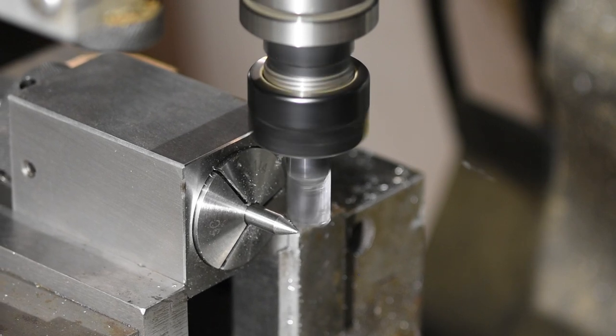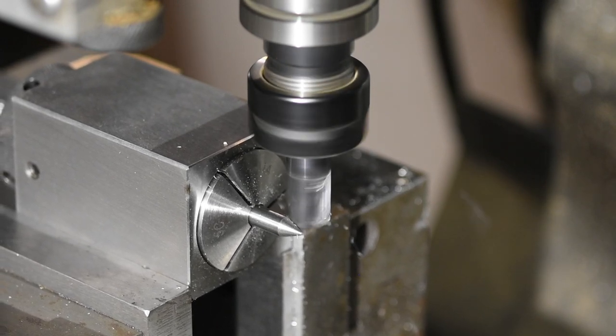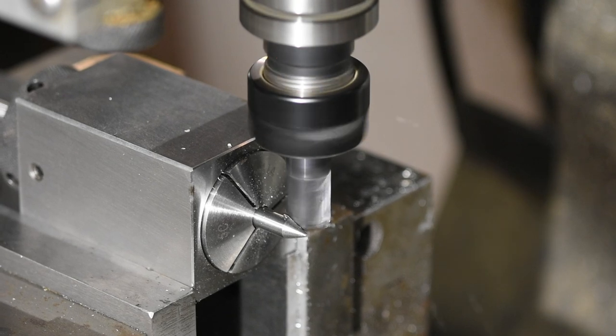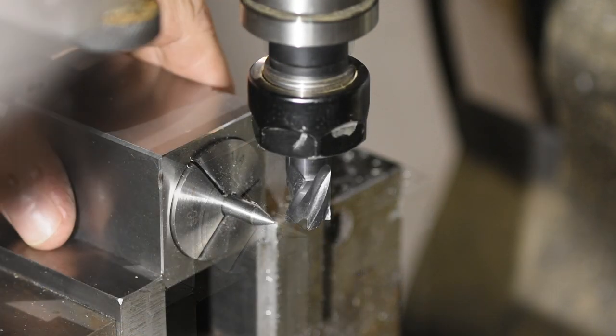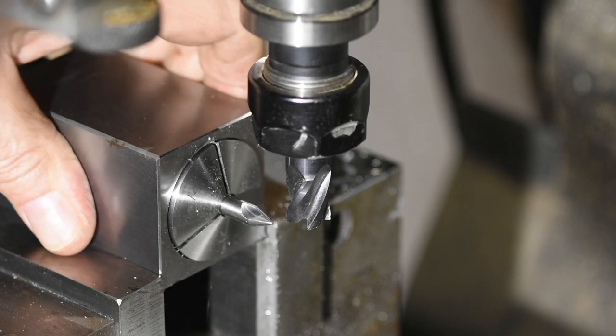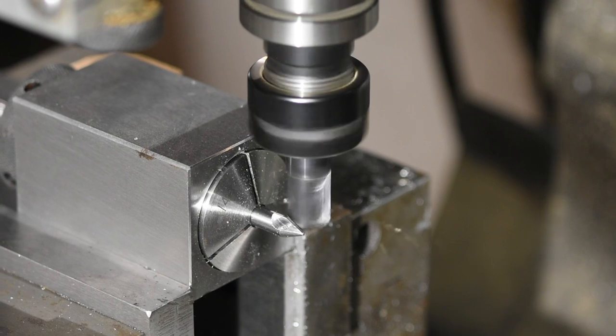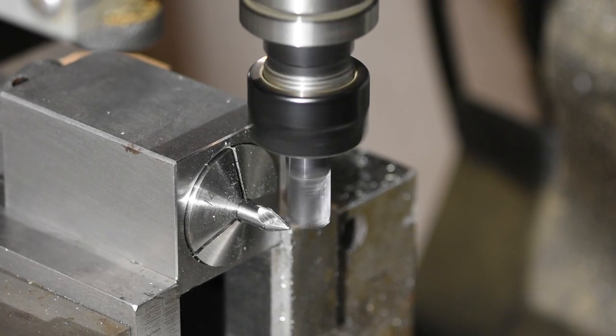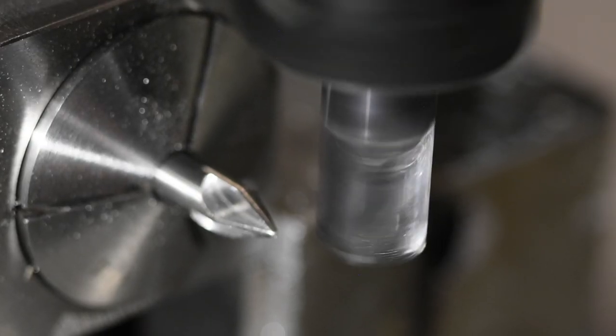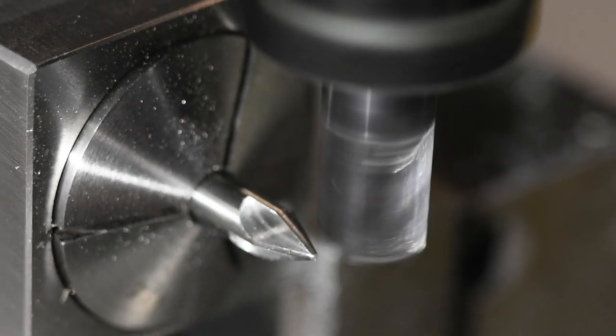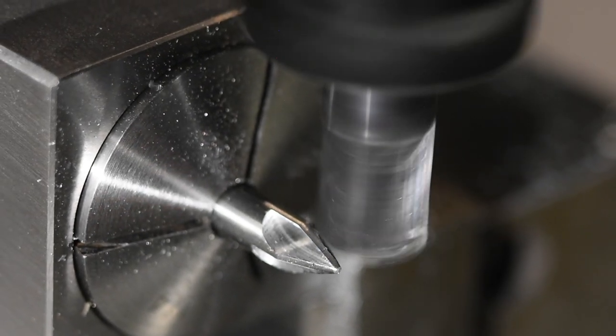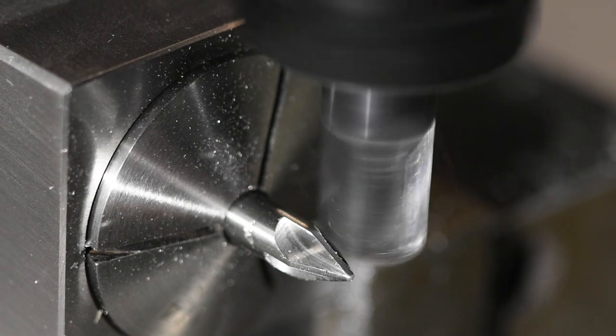Now I'll mill a chunk out of the top right corner of the tool. Next we'll pop the vise open, flip the block 90 degrees, snugging it up against the index block, and we'll just repeat that last operation exactly in each quadrant and we'll have a perfectly symmetrical blade on our screwdriver, in theory.